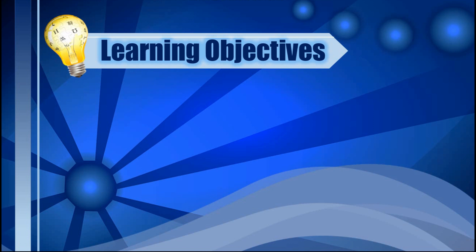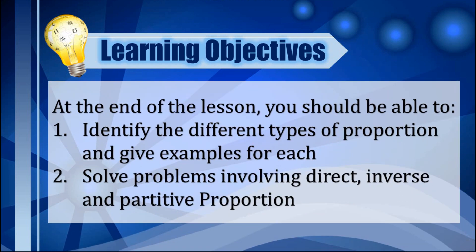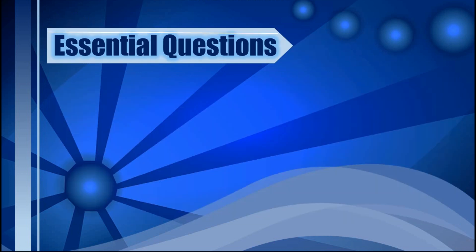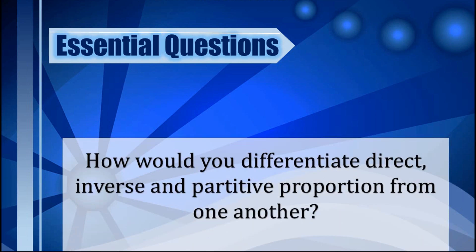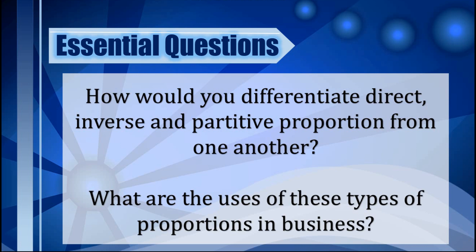For this lesson, our learning objectives are the following. First, you should be able to identify the different types of proportion and give examples for each. And second, be able to solve problems involving direct, inverse, and partitive proportion. To achieve these learning objectives, take note to answer the essential questions: How would you differentiate direct, inverse, and partitive proportion from one another? And what are the uses of these types of proportions in business?